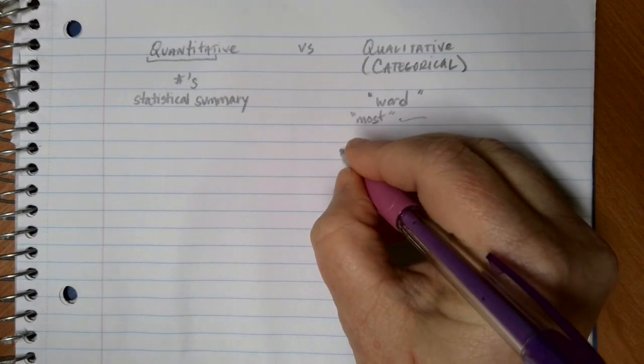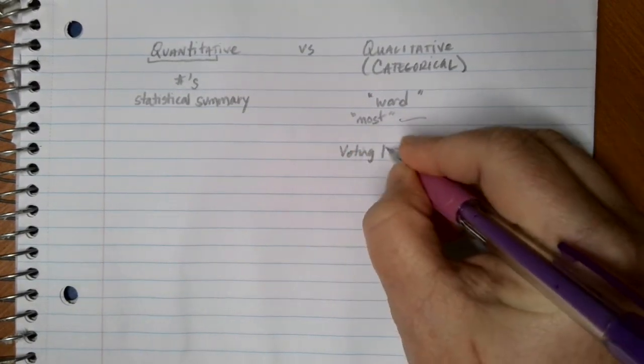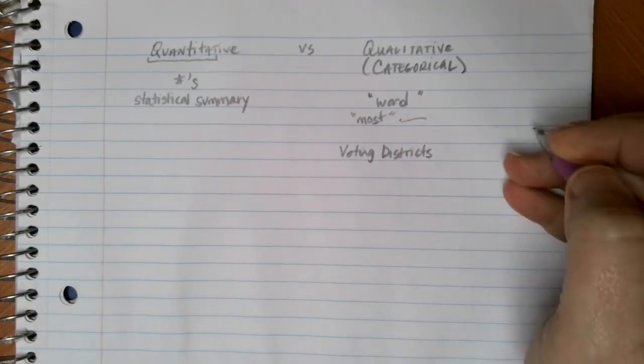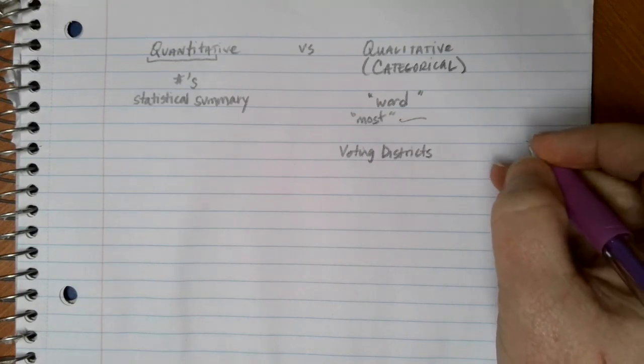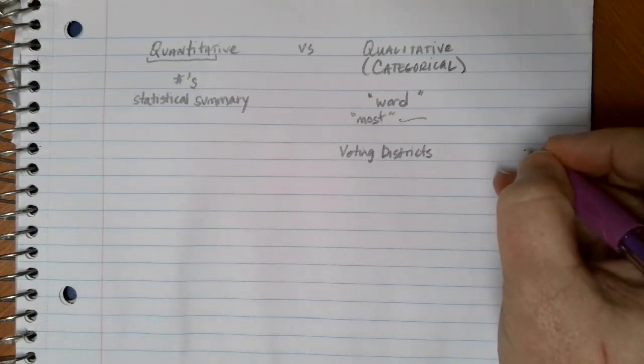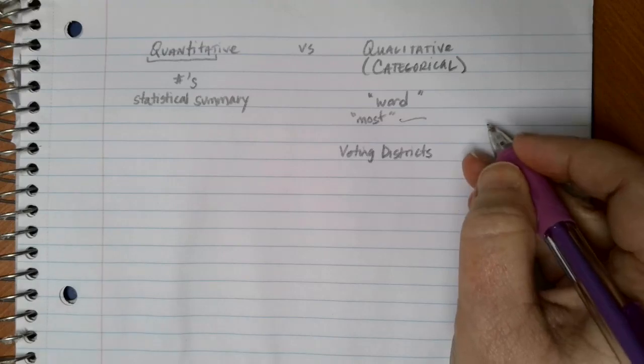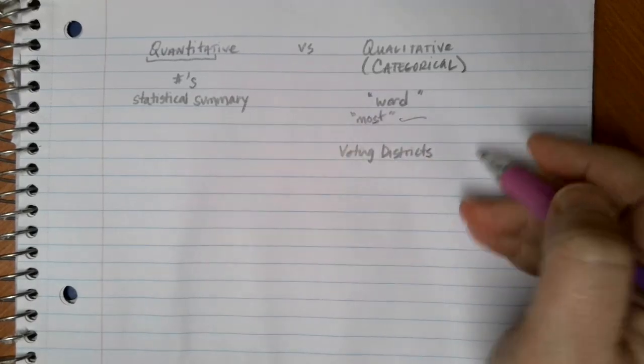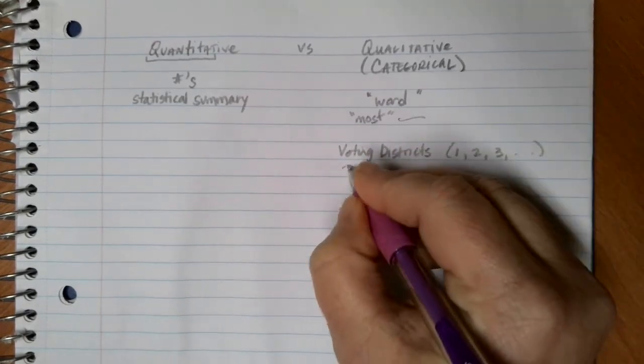Let's say that we have voting districts. Voting districts are generally assigned numbers like one, two, three, four, but if you wanted to talk about what those voting districts were, if you took an average of all the voting districts numbers, really all that this is is it's just accounting. It's a way to label an area. It's not really a number that you can take an average of. So district one, two, three, four or whatever.